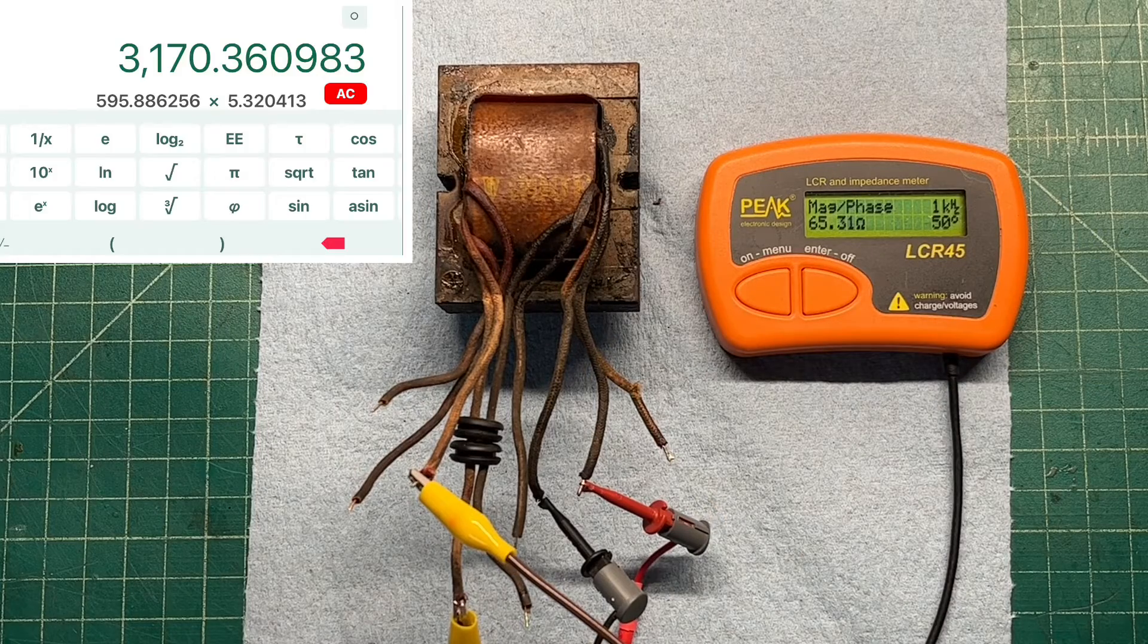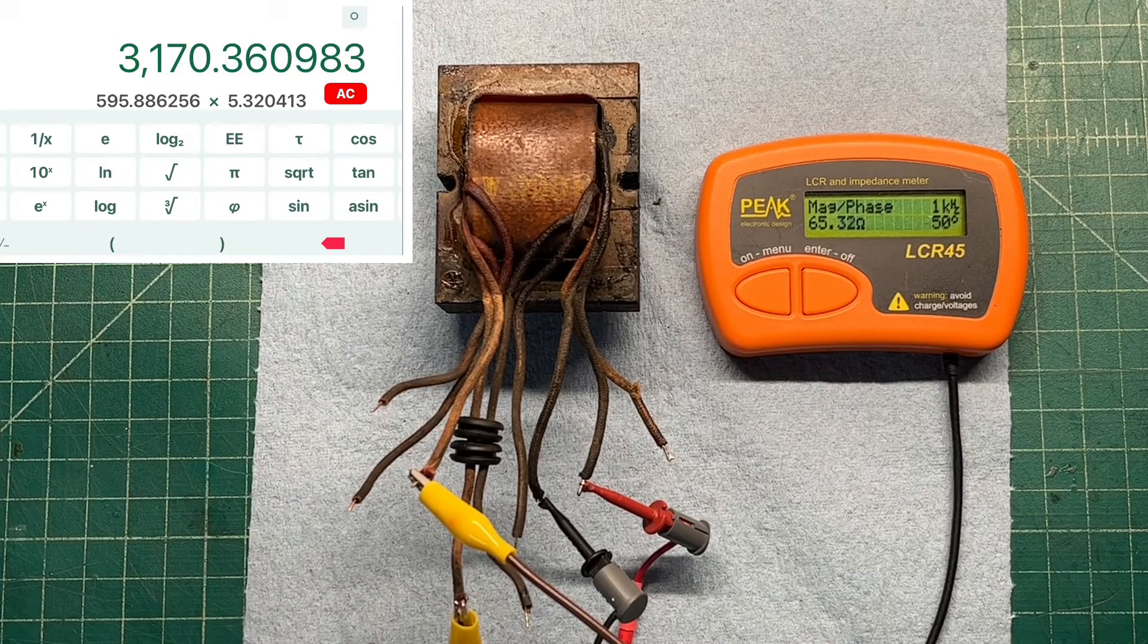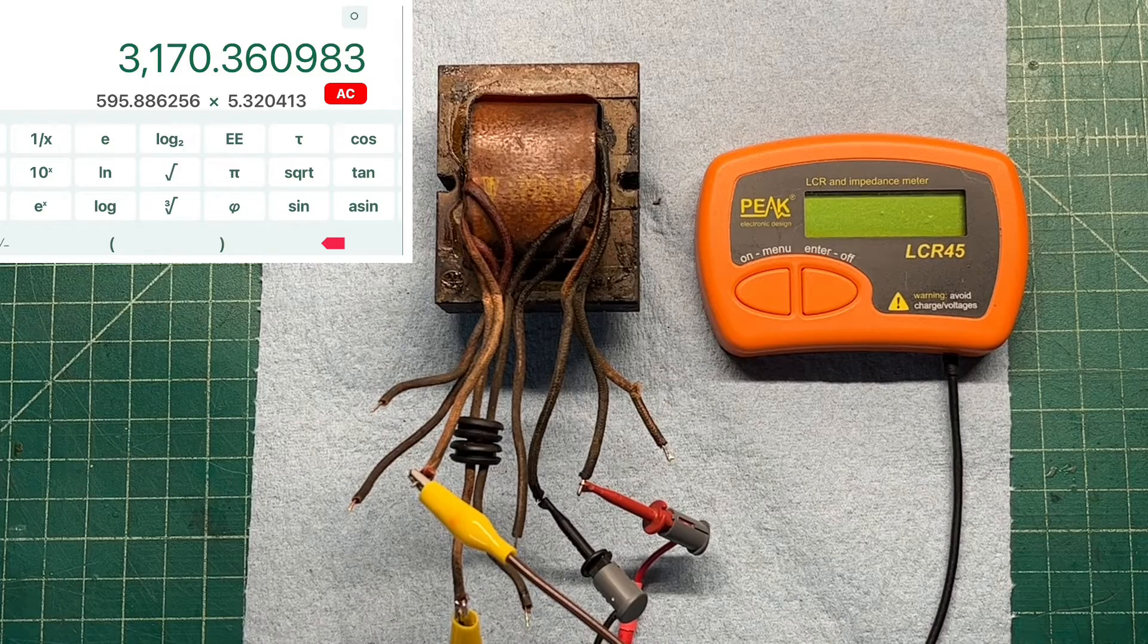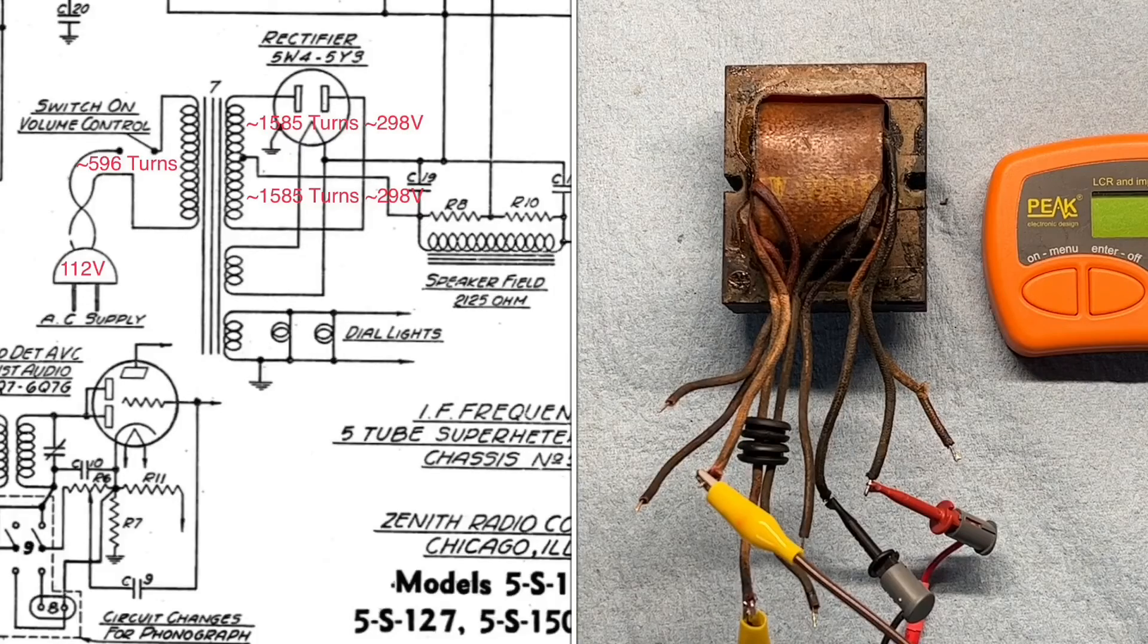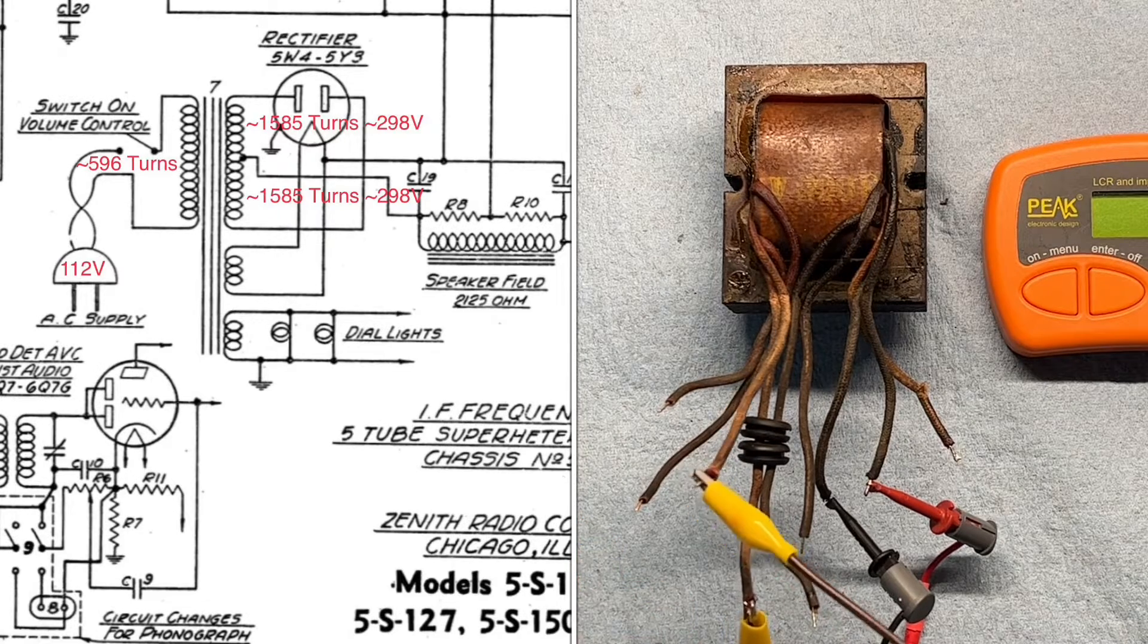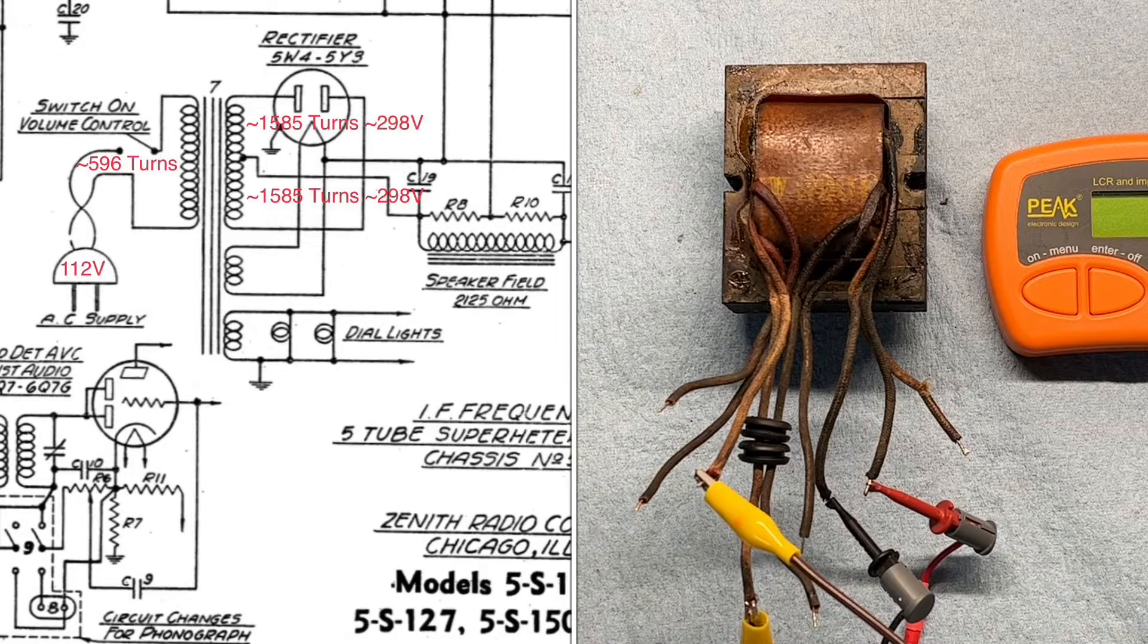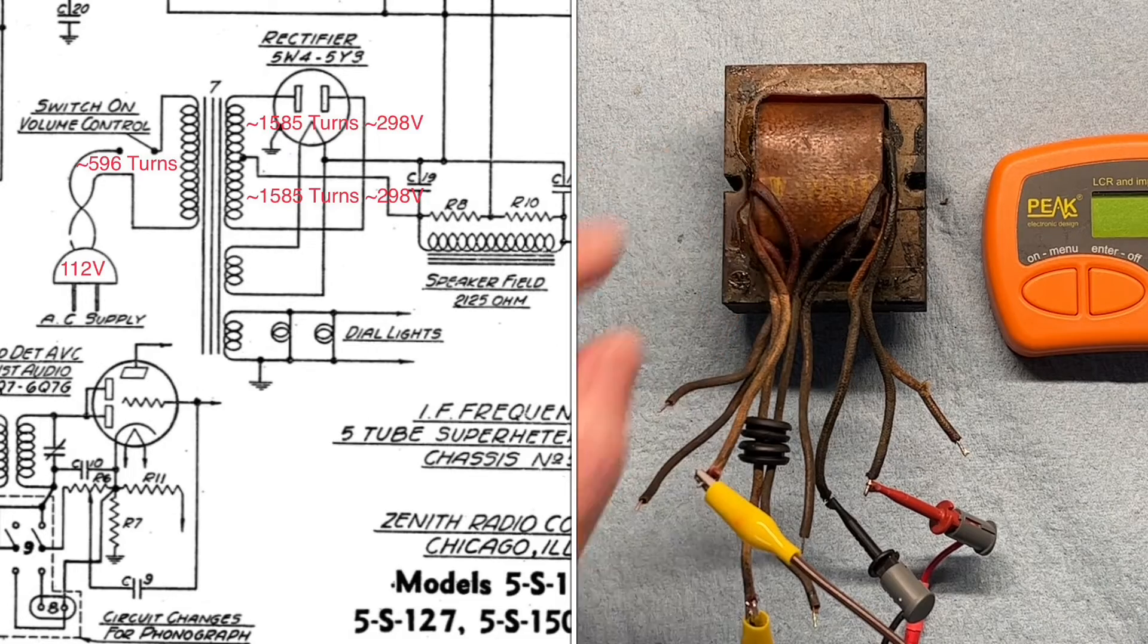So we can take the 596 and multiply that again by the turns ratio of the 5.3 and some change and you see that pushes this up to about 3,170 turns in total for the high voltage secondary. Divide that by two for each half of that number roughly puts it around 1585 turns for each section of the high voltage winding.